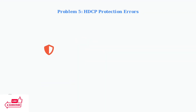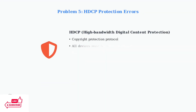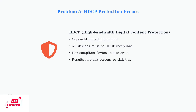HDCP errors are another common issue. HDCP is a copyright protection protocol that requires all devices in the chain to be compliant. If any device doesn't support HDCP or has compatibility issues, you'll see black screens, pink tints, or complete signal failure.